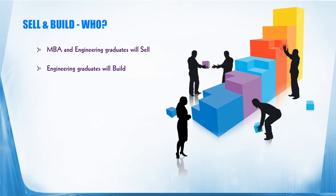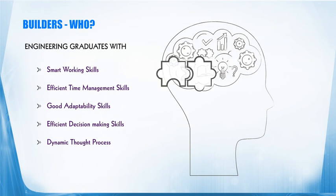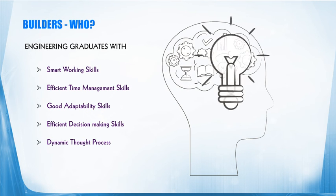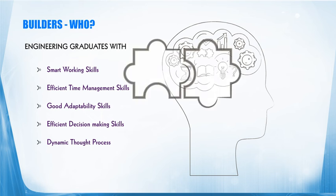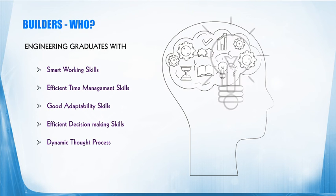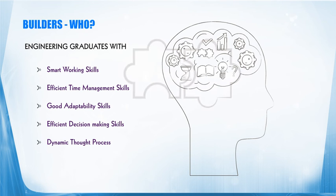Now, who can sell and build? We saw that any MBAs, engineers, or masters can sell. Any Android, C, Java, etc. programmers can build. Both engineering and MBA candidates can sell, and engineering graduates can build. Builders are basically engineering and MCA graduates with smart working skills, efficient time management, who can adapt to different situations in a faster manner, who have a very good and efficient decision-making skill, and finally, a person with an absolutely dynamic thought process which will help him to solve any problem instantaneously without much fuss.